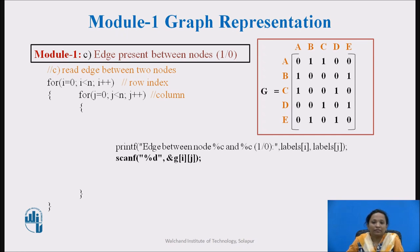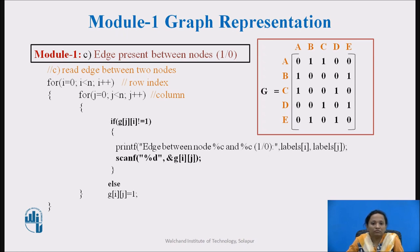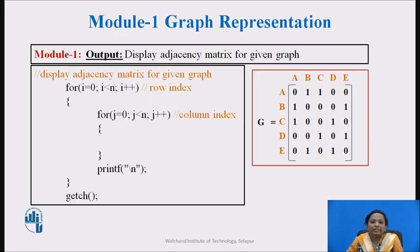Since we are using an undirected graph, if there is an edge between node A to node B, then there is an edge from node B to node A also. So the value at cell G[i][j] being 1 means the value at cell G[j][i] is also 1. We can add a condition to avoid asking the user for duplicate edge information. If the value at G[j][i] is already 1, there is an edge; otherwise set G[j][i] to 1. Zero means no edge, and 1 means an edge is set directly. Finally, the adjacency matrix for the given graph is displayed using a nested for loop, the same way any two-dimensional array is displayed.